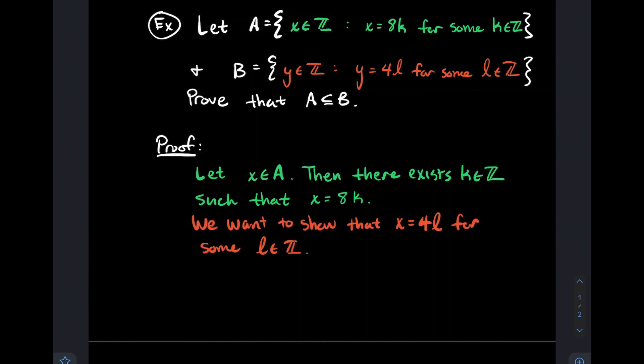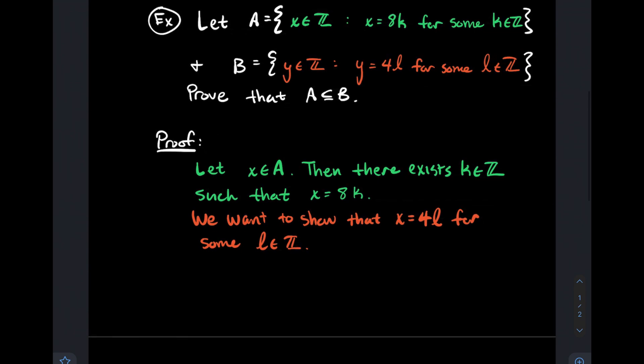Remember, the goal is to try to use that information to show that X is really a multiple of four. In symbols, you're trying to say that X is equal to 4L for some integer L. So how are we going to work with this?